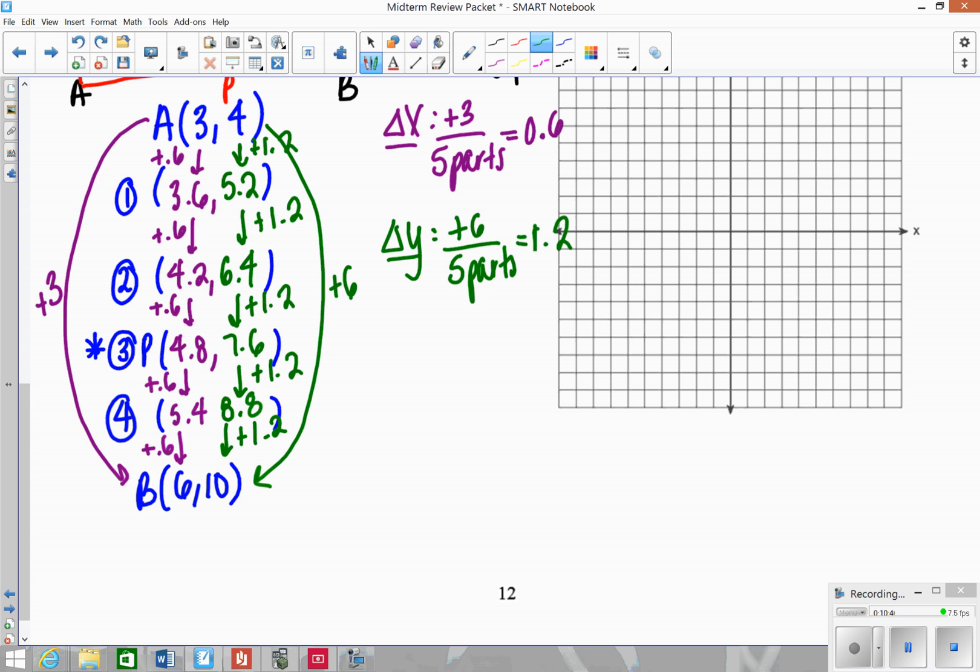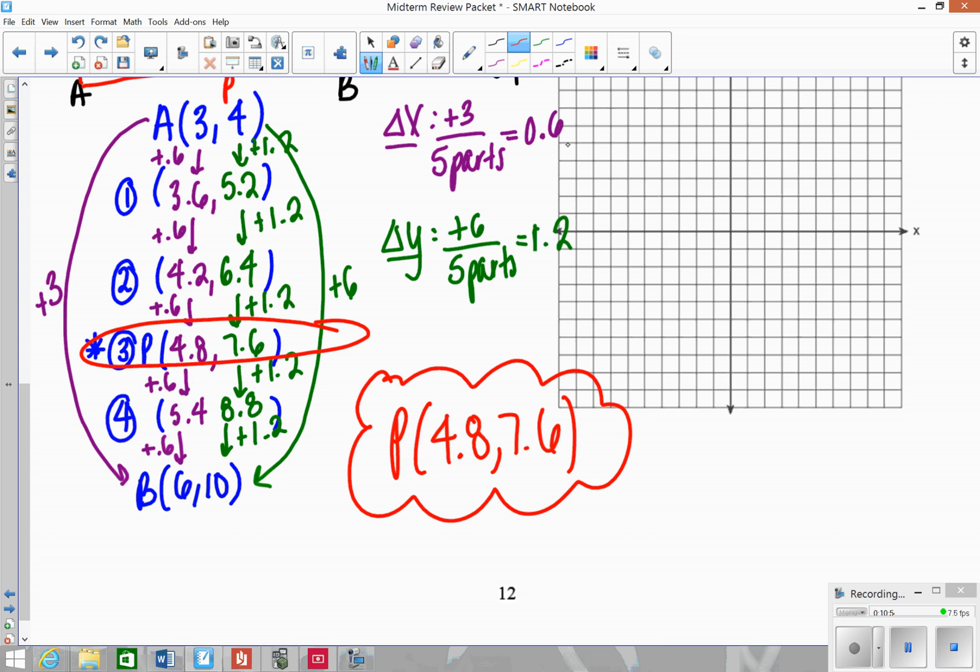So then your answer is where P occurs. So P is 4.8, 7.6. And this would be one that would be really hard to do on a graph because you'd be counting right 0.6 and up 1.2 which would just be a pain. So that's why you definitely have to know how to do this one algebraically.